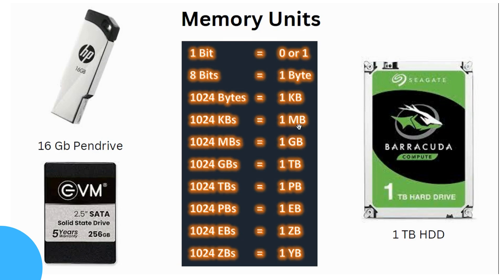1024 kilobytes is equal to 1 megabyte. 1024 megabytes is equal to 1 gigabyte (GB). 1024 gigabytes is equal to 1 terabyte (TB).